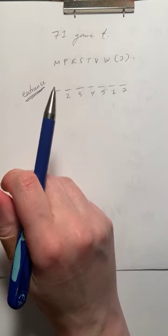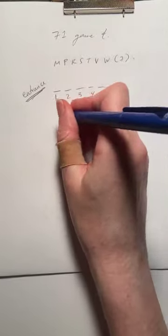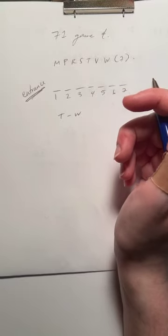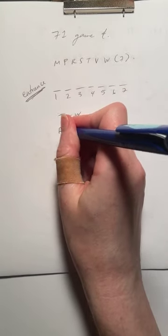All right, the Turner must be closer to the entrance than the Whistler. R has to be closer to the entrance than M, with exactly one painting between them.